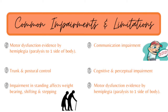The next impairment is trunk and posture control. This is going to increase risk for falls, limit their functional activity, and decrease their independence in ADLs. There's also going to be impairment in any standing activity. It's going to affect their weight-bearing skills, how they weight shift, and how they step and walk, which will also increase their risk for falls.